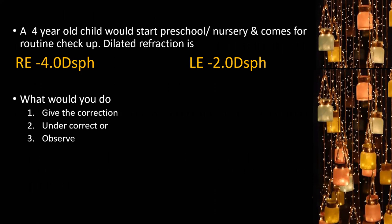Case 7: A four-year-old starting preschool with dilated refraction of right eye minus 4 and left eye minus 2, orthophoric. Decision: give full correction. Children can tolerate anisometropic correction better than adults, and amblyopia risk makes early full correction essential.